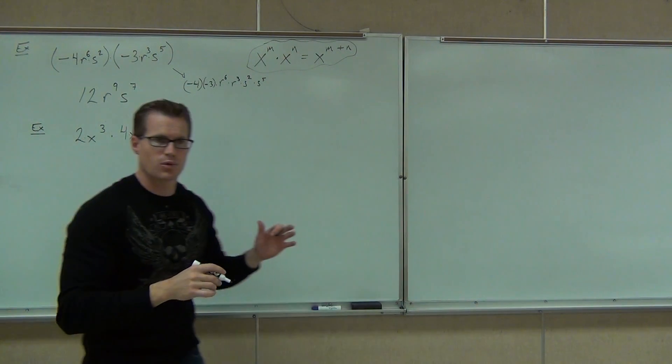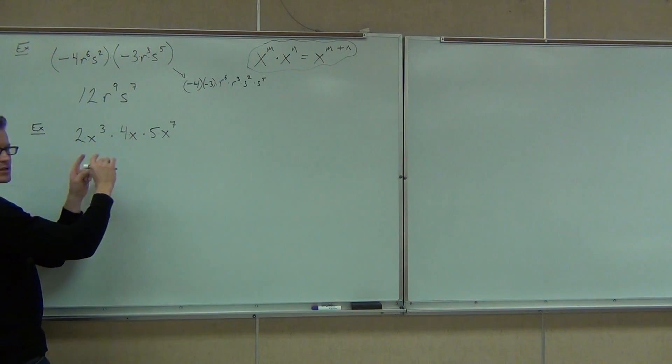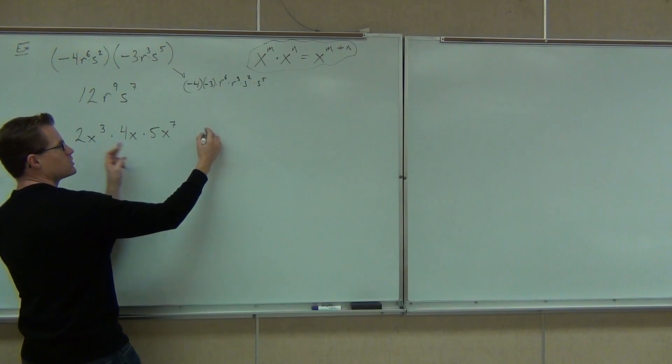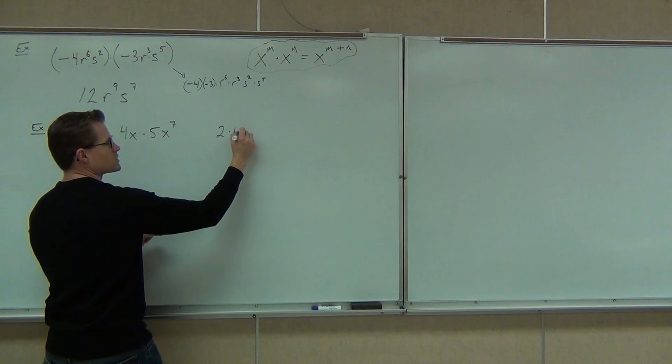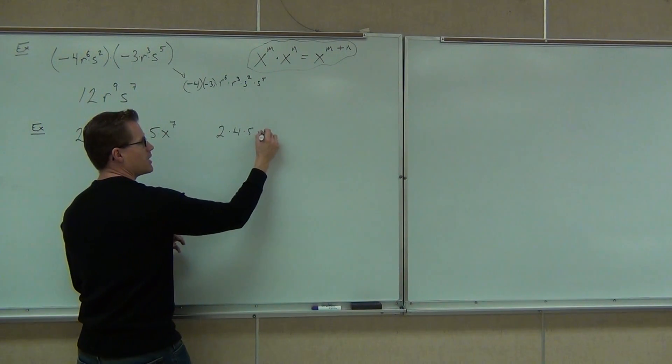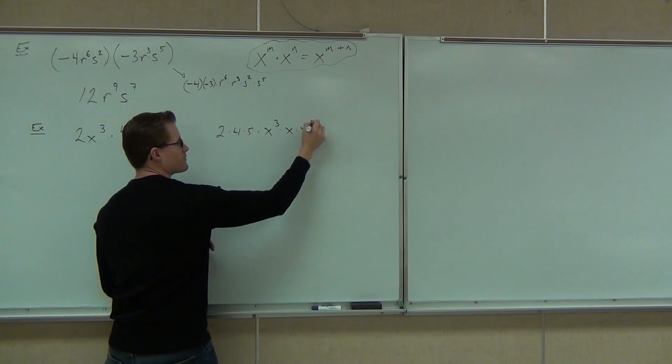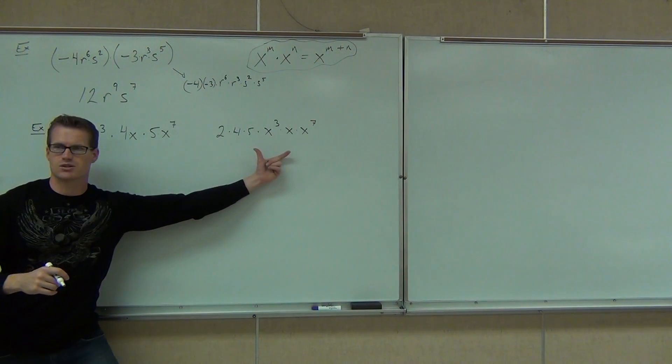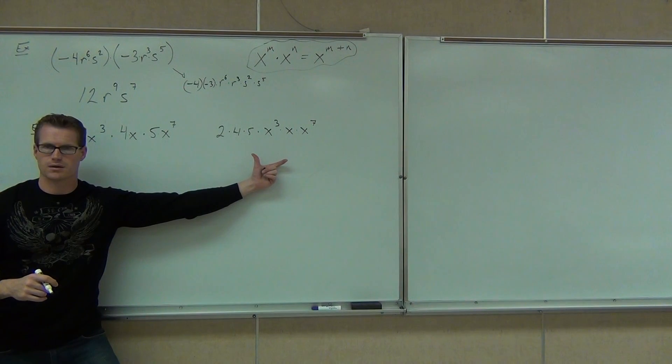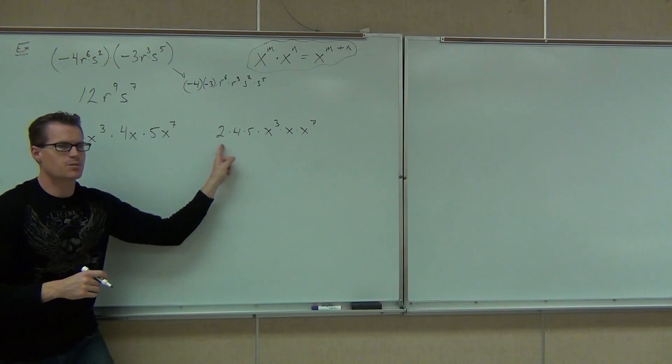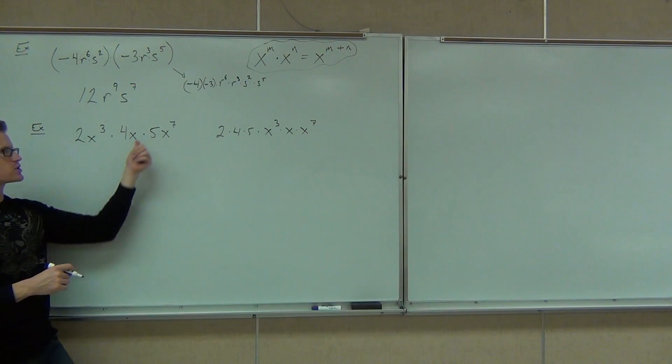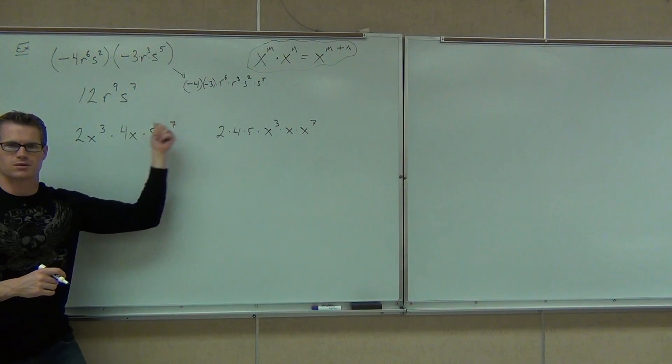Look what we could do. Watch on the board here real quick. You could reorganize this. That's all multiplication. You could make this 2 times 4 times 5. You could group your numbers, and then you would have x³ times x times x⁷. Can you get from here to here? Are you guys all right with that? So that means you can multiply your numbers together. We can do that right now. What's your numbers going to be when you multiply those together? Forty.